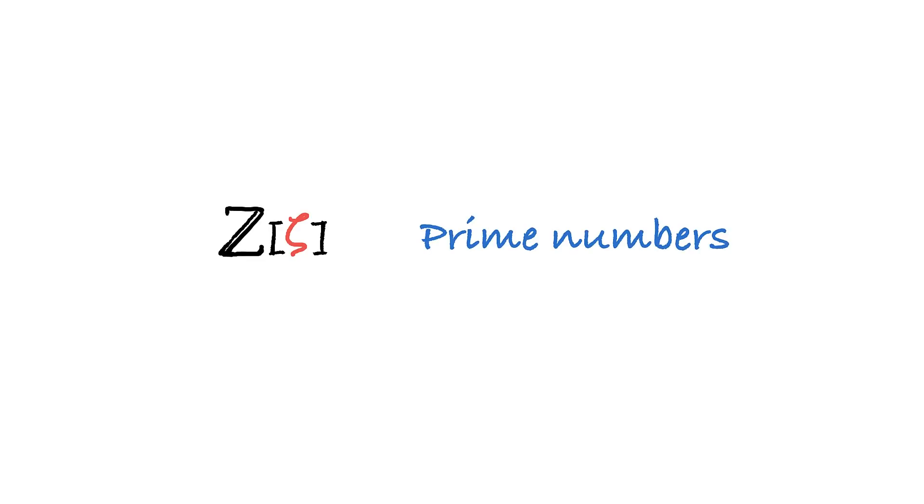And similar to our good old integers, the new ring has prime numbers, which is numbers that don't have any non-trivial divisors. But here's also a first surprise: p, the number that was prime in Z, is actually no longer prime in Z[zeta]. How about that? In this new ring, there is a prime element 1-zeta which divides p. Actually, even its (p-1) power divides p.